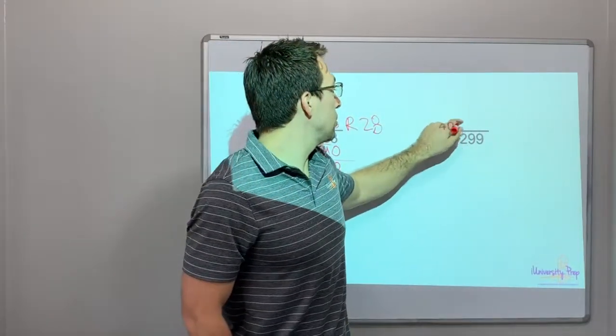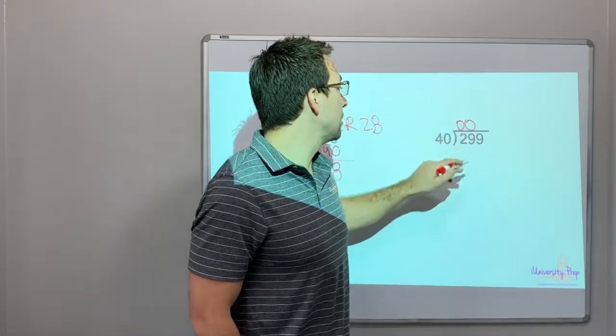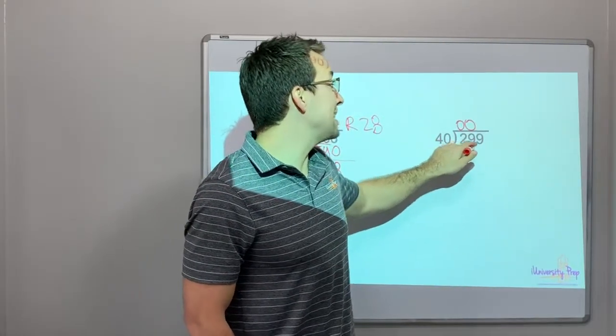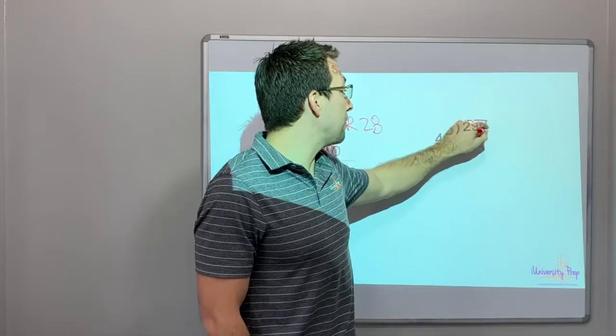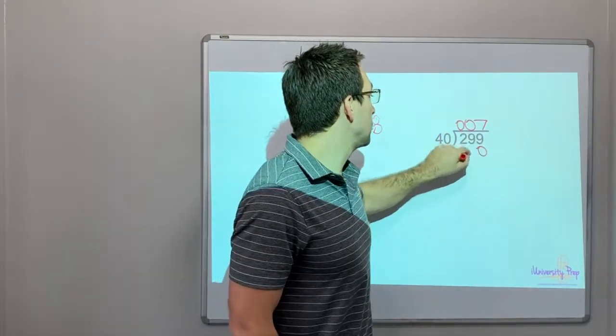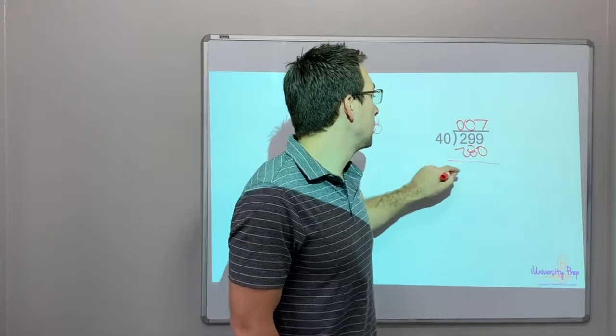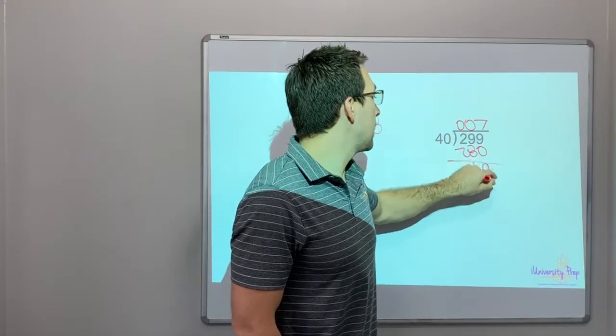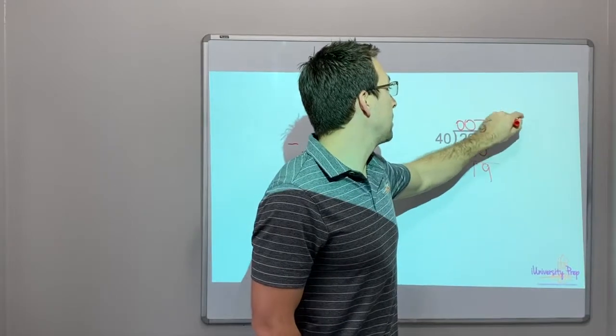40 goes into 2, 0 times. 40 goes into 29, 0 times. 48 goes into 28. 4 times 7 is 28. 0, 20, 280. That would be 1, 9, right? So 7 remainder of 19.